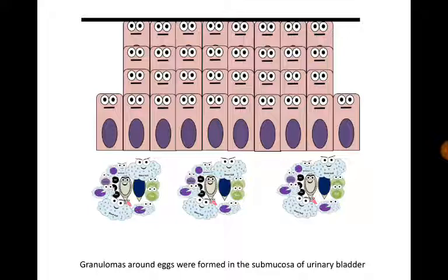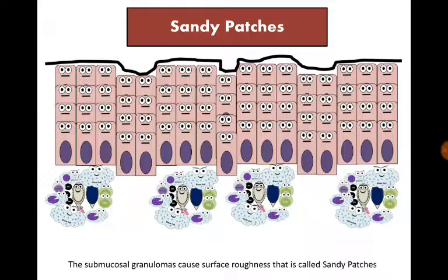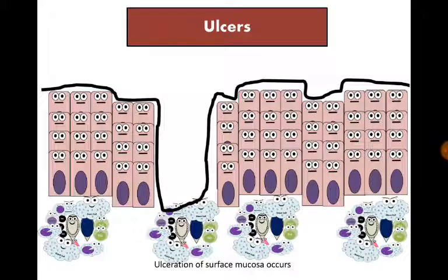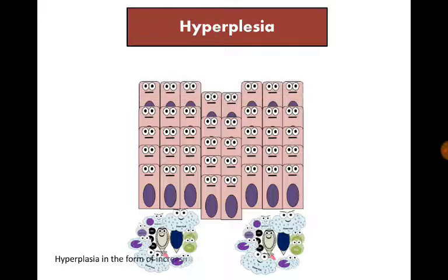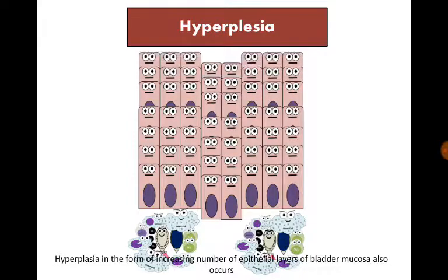Granulomas around eggs were formed in the submucosa of the urinary bladder. The submucosal granulomas cause surface roughness, called sandy patches. Ulceration of the surface mucosa also occurs. Hyperplasia, in the form of increasing numbers of epithelial layers of bladder mucosa, also occurs.